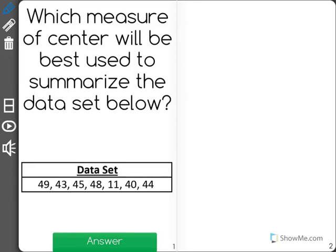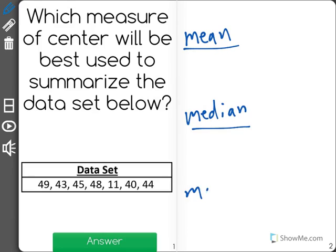Which measure of center will be best used to summarize the data set below? There are three measures of center you could use: you could use the mean, the median, or the mode. These are the three measures of center.